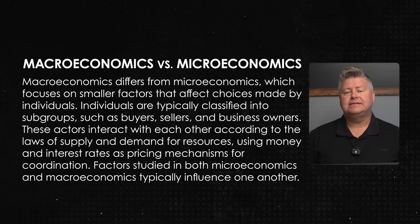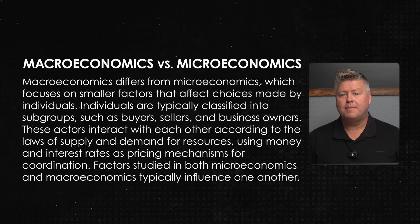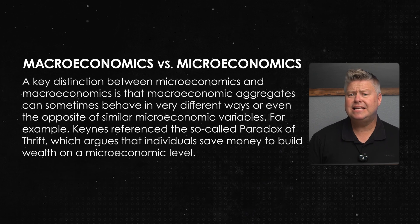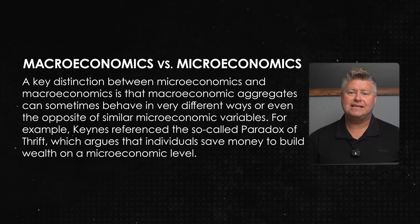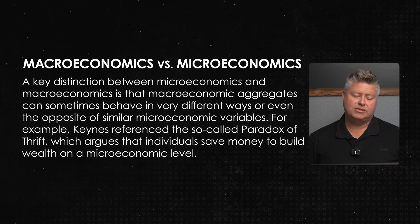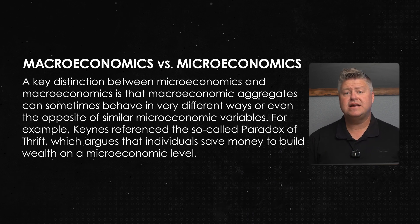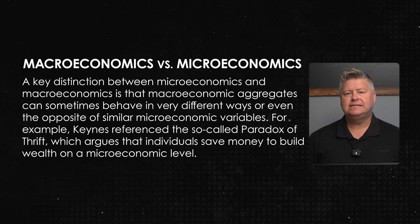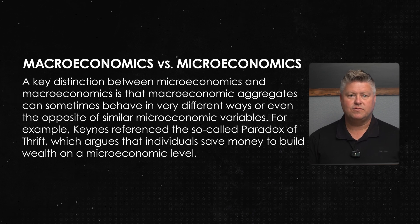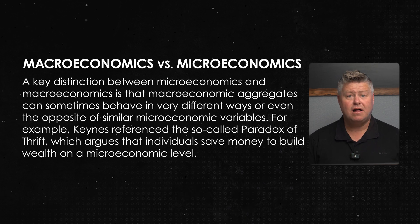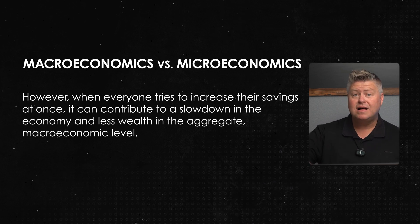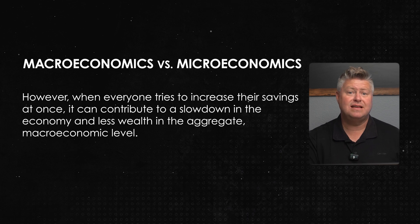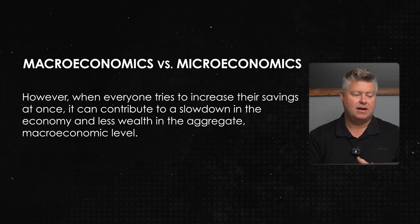Factors studied in both microeconomics and macroeconomics typically influence one another. A key distinction is that macroeconomics aggregates can sometimes behave in very different ways, or even the opposite of similar microeconomic variables. For example, Keynes referenced the so-called paradox of thrift, which argues that individuals save money to build wealth on a microeconomic level. However, when everyone tries to increase their savings at once, it can contribute to a slowdown in the economy and less wealth at the aggregate macroeconomic level.